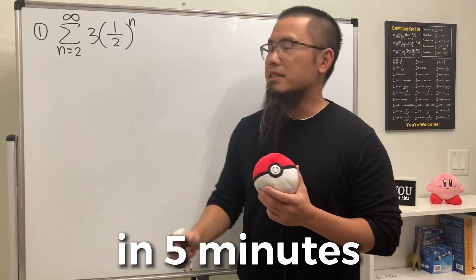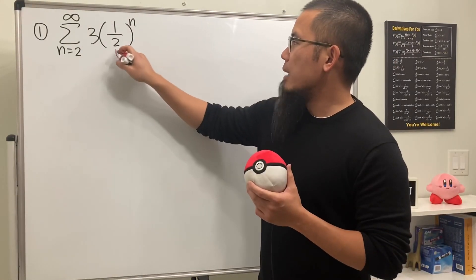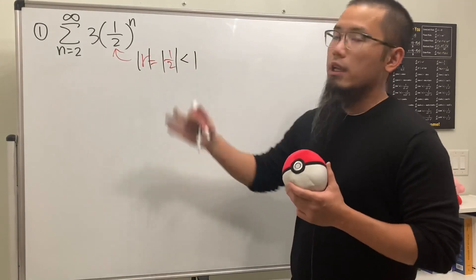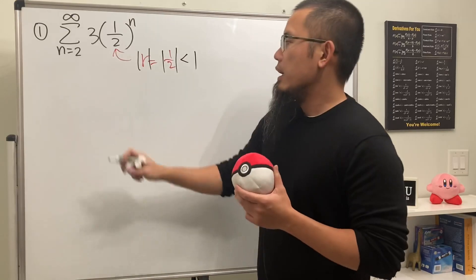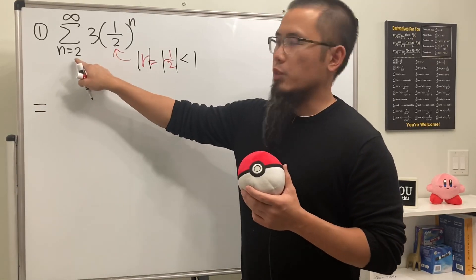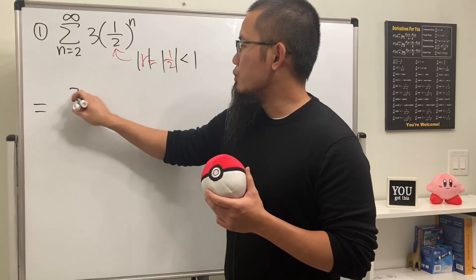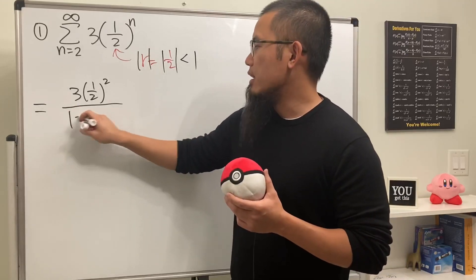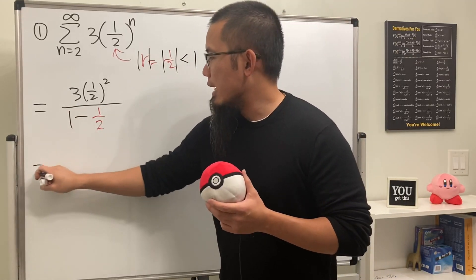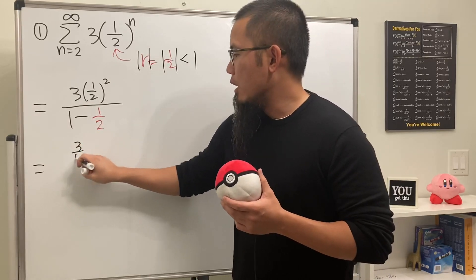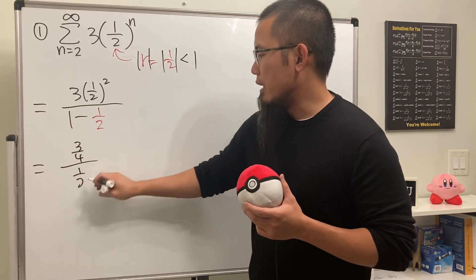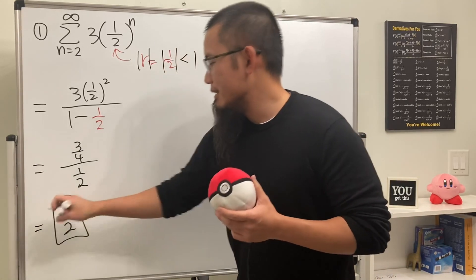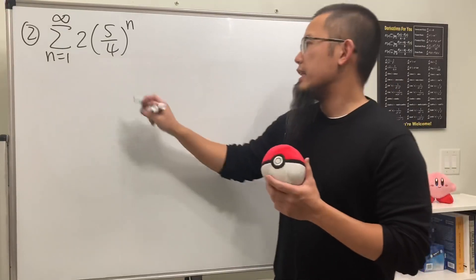Five geometric series in five minutes. For the first one, the common ratio is one half, and since its absolute value is less than one, this series converges. It converges to the first term divided by one minus the common ratio: three times (1/2)^2 over (1 - 1/2). On top we get three over four, on the bottom one half. Multiplying top and bottom by two gives three over two.